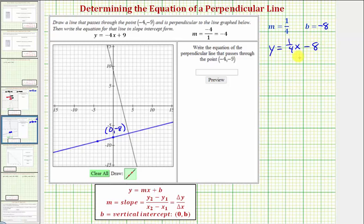But sometimes we may not be able to determine the exact vertical intercept by analyzing the graph, so let's also show how to find it algebraically. Since we know the slope is one fourth, we know the equation must be y equals one fourth x plus b. We know our line also contains the point negative four comma negative nine, which means the coordinates must satisfy this equation. So we can substitute negative four for x, negative nine for y, and then solve for b.